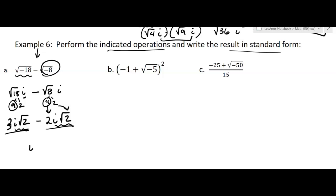3 minus 2 is 1. And so I have 1i square root 2. Okay, I don't need the 1. All right, so that's how you do that problem.